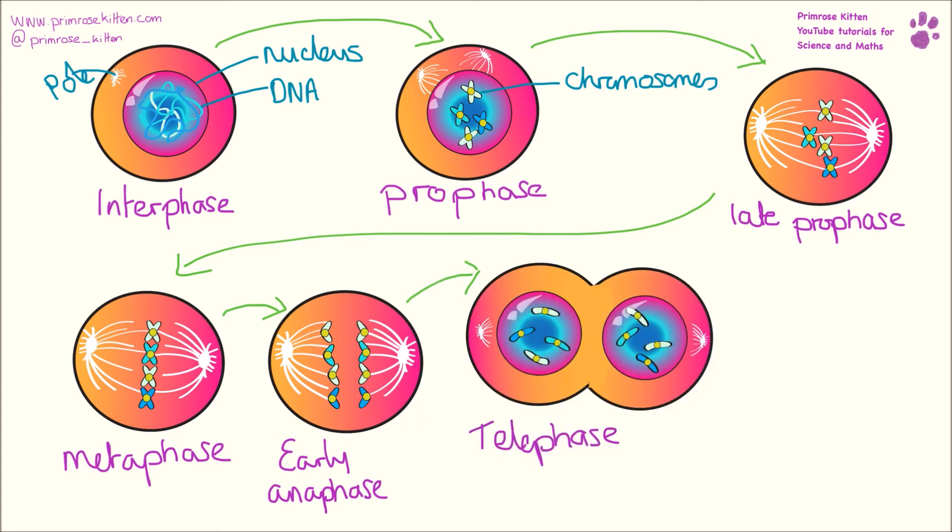Once the DNA is safely at each side of the cell, the membrane around the nucleus will start to reform and the spindles will start to disassemble. You'll see that the cell has started to pinch in around the middle.